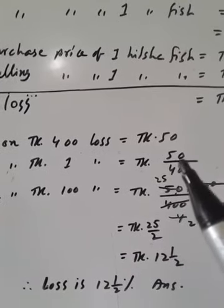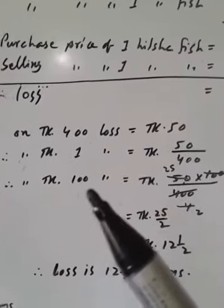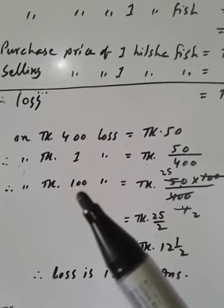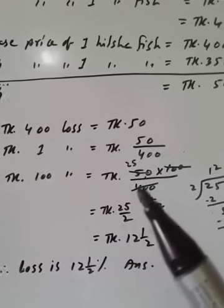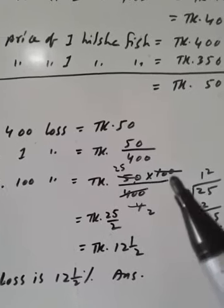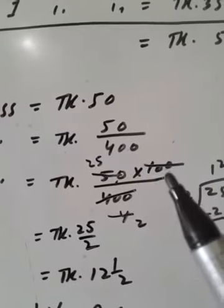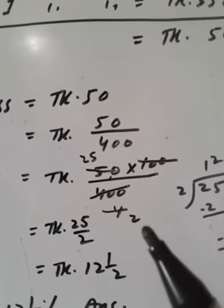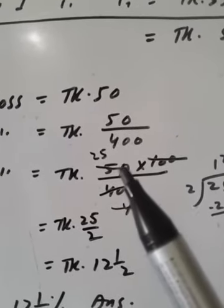On Taka 1, loss is 50 by 400. To find out percentage, we have to find for 100. On Taka 100, loss is 50 by 400 times 100. 400 divided by 100 is 4. 4 divided by 2 is 2, and 50 divided by 2 is 25.